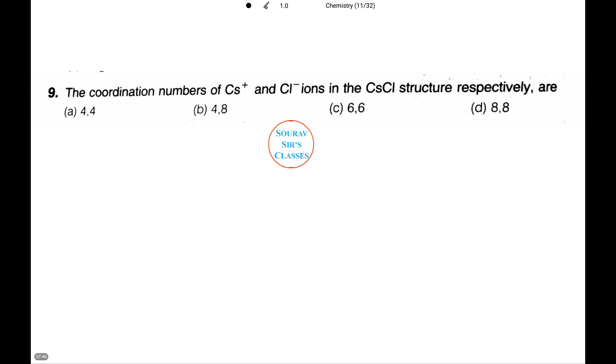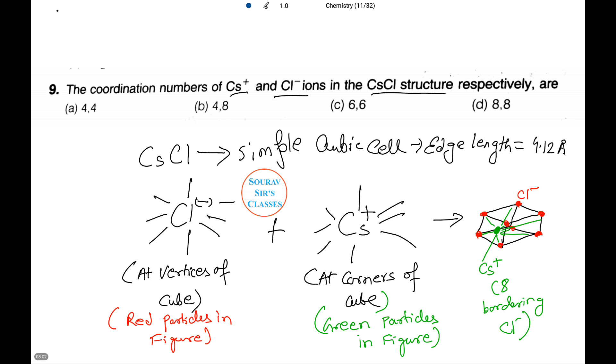Thus the order is CO2 gaseous > CO2 liquid > CO2 solid, and this coincides with number C as our answer. Now we need to figure out the coordination number of Cs ions and Cl ions in the cesium chloride structure.